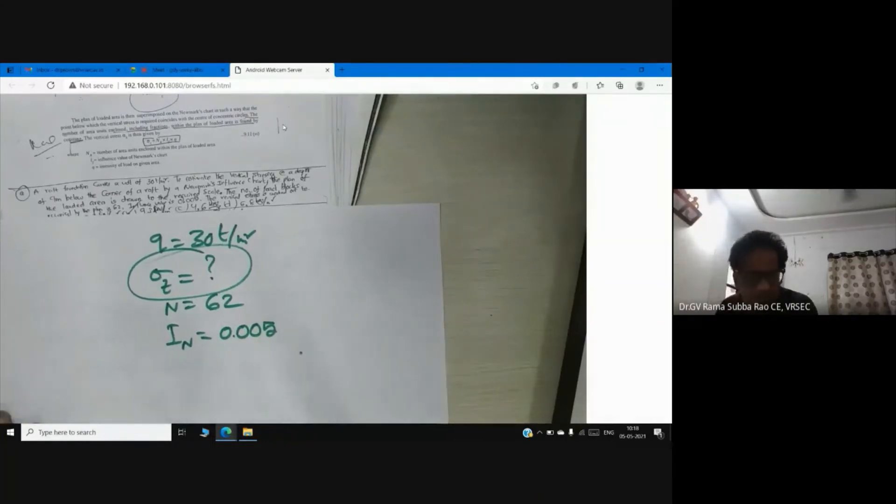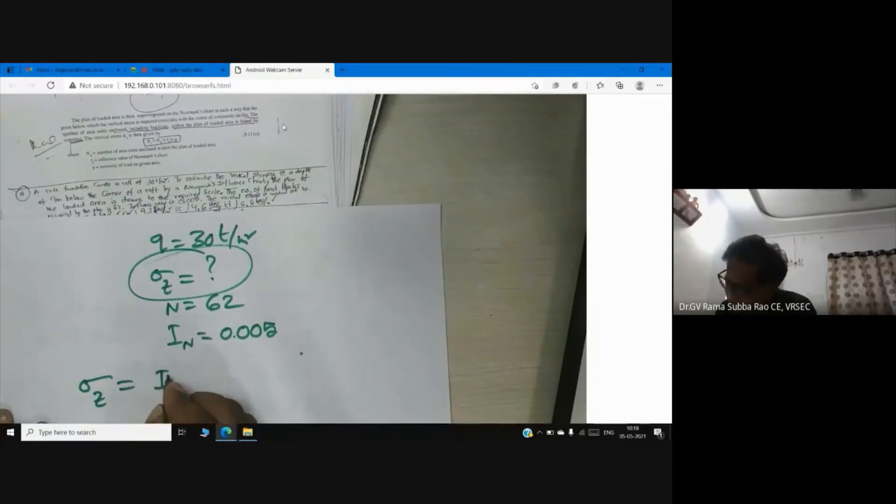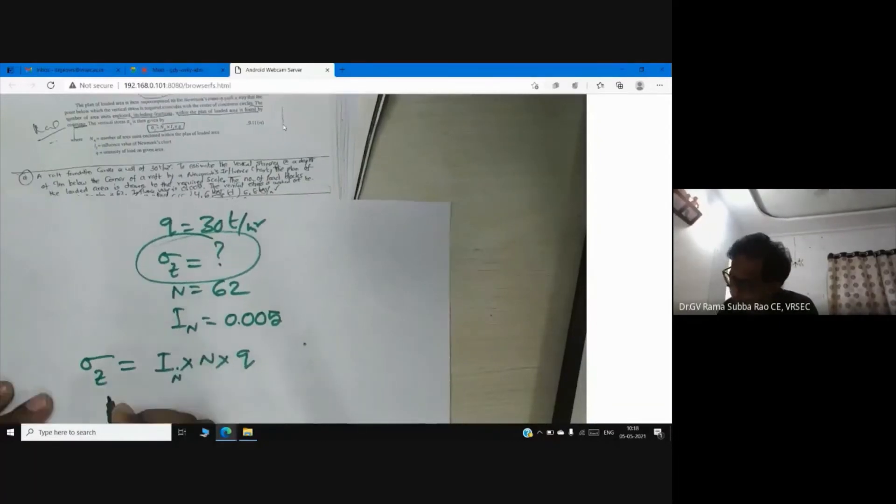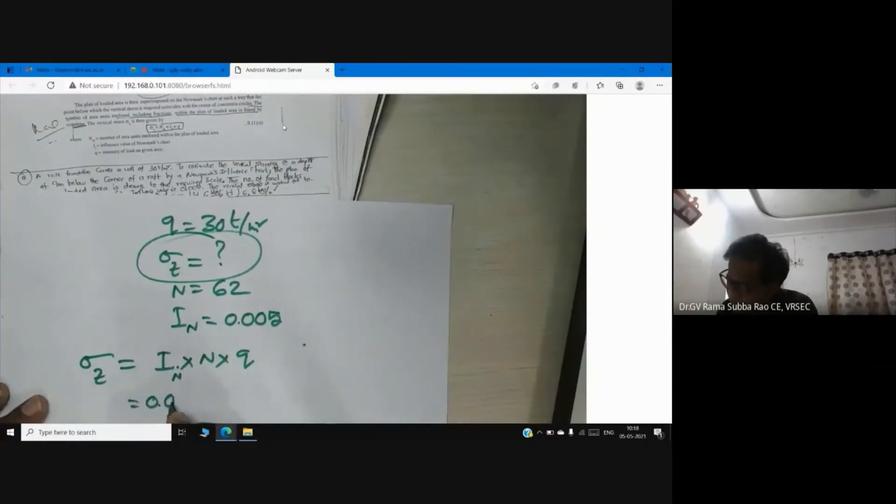Okay, so please tell me now: how to calculate sigma z? What is the formula for sigma z? Sigma z is equal to I into n into q, where I_n is the influence number. Strictly speaking, so here: 0.005 into n...